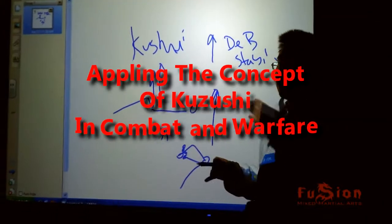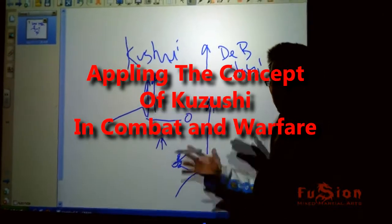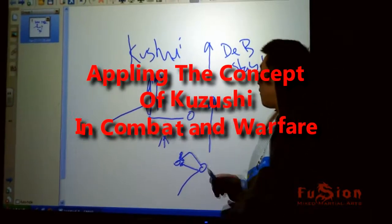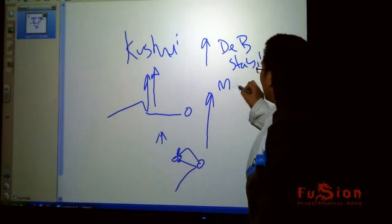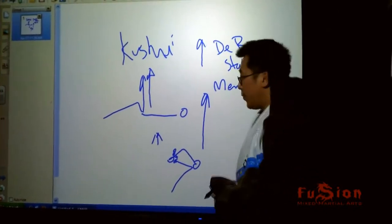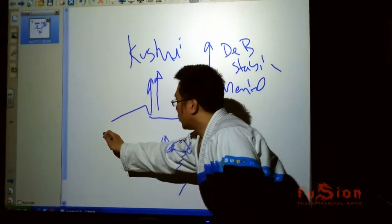So if someone's on a skateboard, that's easy to off balance than someone who's standing there. Okay? You can also off balance them mentally. Alright? So in the Book of War, Sun Tzu, the Book of War.